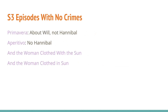These are the season three episodes with no crimes. The first two are just when Hannibal is on the run in Italy, and he's usually the one committing crimes, so there just weren't any others. The second two are from the half of season three with Francis Dollarhyde, and he's just not committing any murders in those episodes.